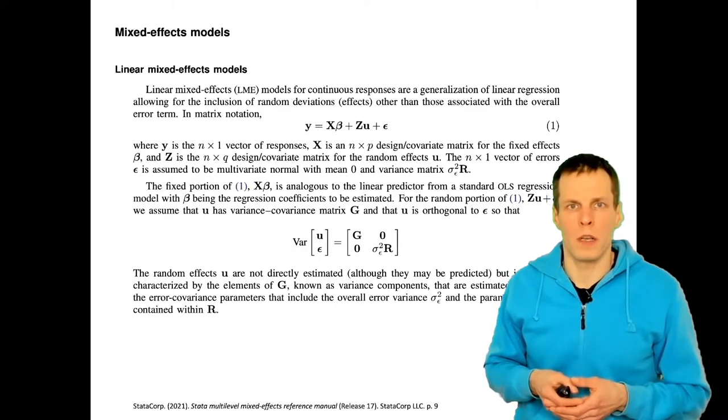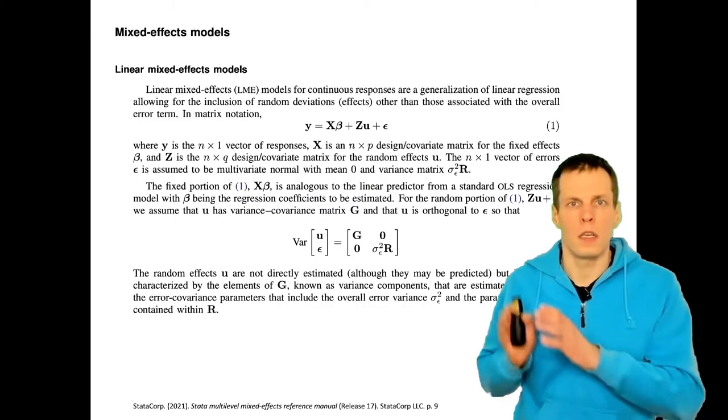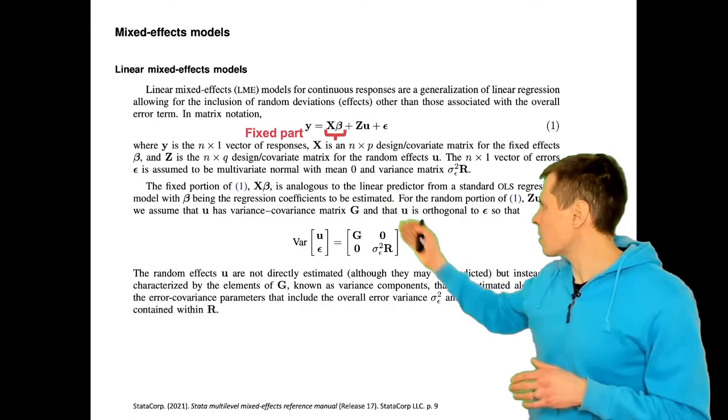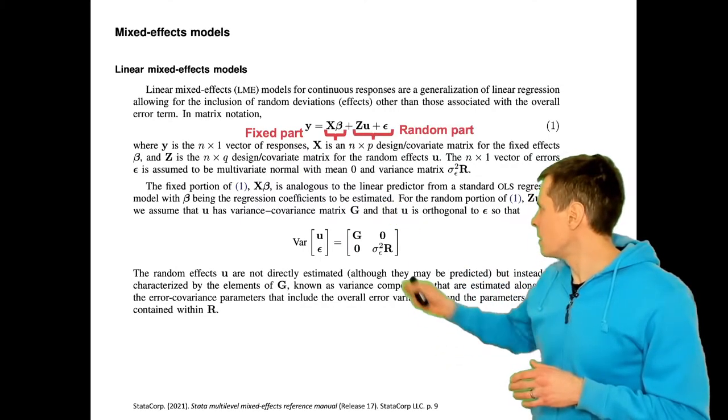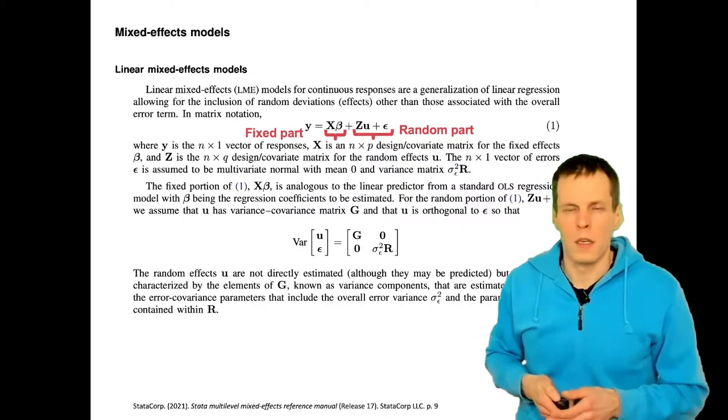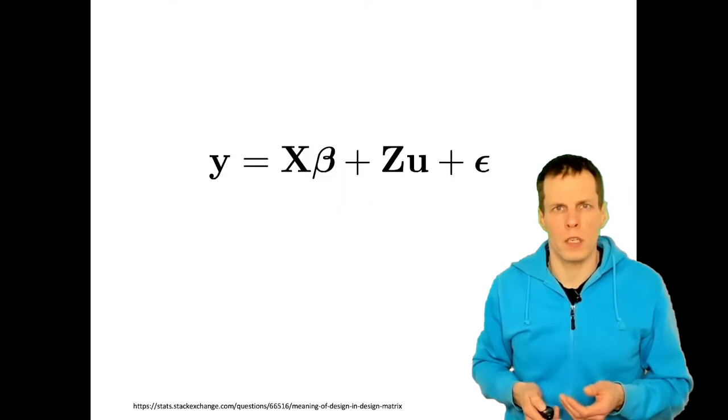For example, the Stata User Manual explains multilevel modeling in standard matrix notation. The idea is that we have a fixed part xβ, x beta, and then we have the random part consisting of z, u, and the error term ε. Let's take a look at this equation in more detail.